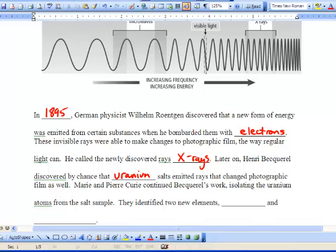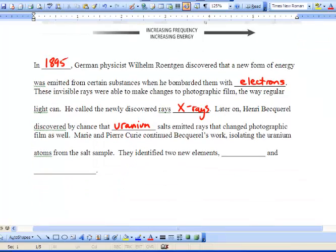Mary and Pierre Curie continued Becquerel's work isolating the uranium atoms from the salt sample. They identified two new elements, polonium and radium. Mary Curie later died due to radiation poisoning.